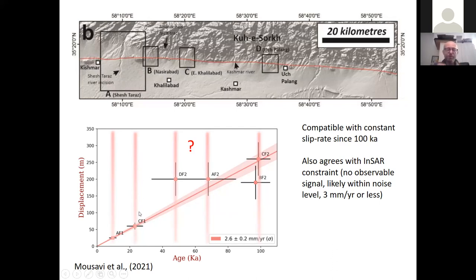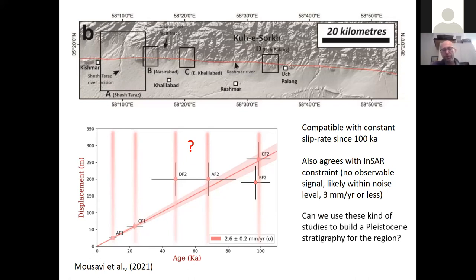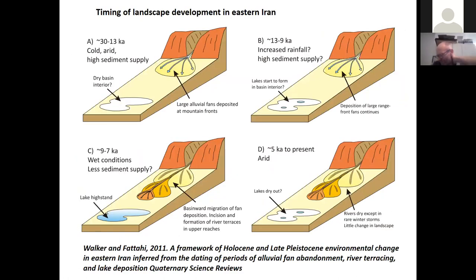This is where we start getting into the paleoenvironmental parts of the story. We see ages clustering at 10,000 years, just over 20,000 years, a lot at 50,000–60,000 years, and something at 100,000 years. Are these responding to paleoenvironmental signals? Are they correlatable over large areas? Can we build a correlatable Quaternary stratigraphy for the region? Turkmenistan appears to be a place where we can actually start to get into that — and it's been of long-term interest to me and colleagues.